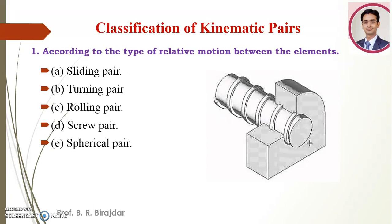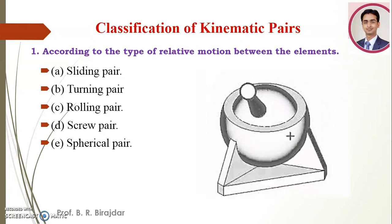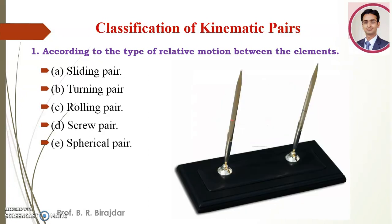Next: the spherical pair. When the two elements of a pair are connected in such a way that one element turns or swivels about the other fixed element, the pair formed is called a spherical pair. An example is a paint stand where a solid sphere fits inside a hollow sphere, allowing movement in any direction. Other examples include a car mirror or a ball and socket joint.